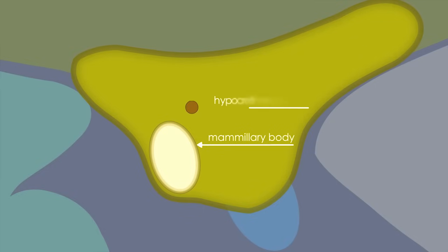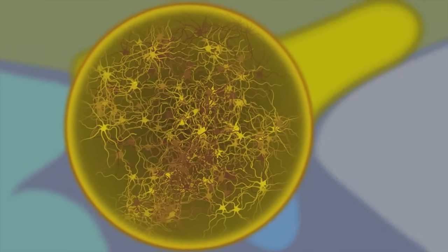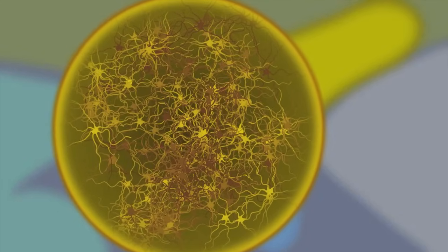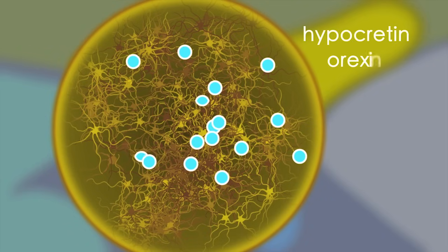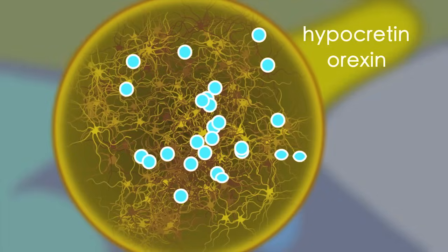This is called the mammillary body. And just above it right here is where the hypocretin neurons sit. And this is a really critical collection of neurons, brain cells, that makes very particular and special neurotransmitters known as hypocretin or orexin. Those are just two names for the same thing.